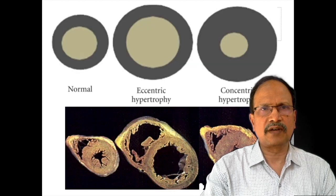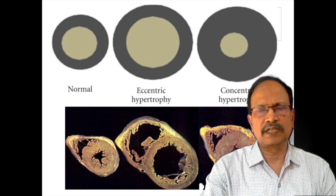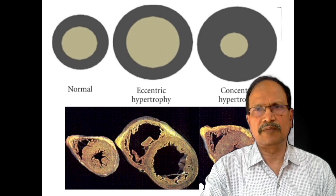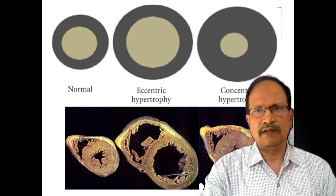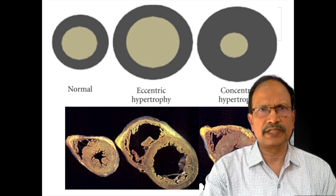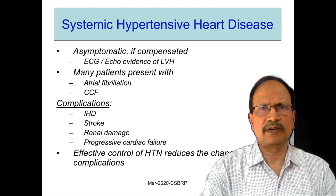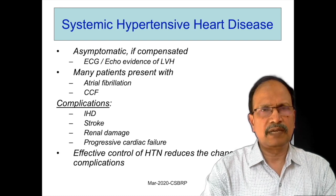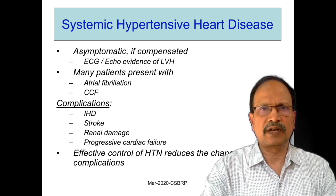This slide represents the normal ventricular chamber, eccentrically hypertrophied ventricle, and also concentric hypertrophy of the ventricle. In the case of concentric hypertrophy, appreciate the increased thickness of the wall with compromise of the luminal volume. In eccentric hypertrophy, the chamber is dilated and the thickness of the ventricular wall is also increased. In systemic hypertensive heart disease, most patients, if compensated, are asymptomatic, but ECG and echo may show left ventricular hypertrophy.